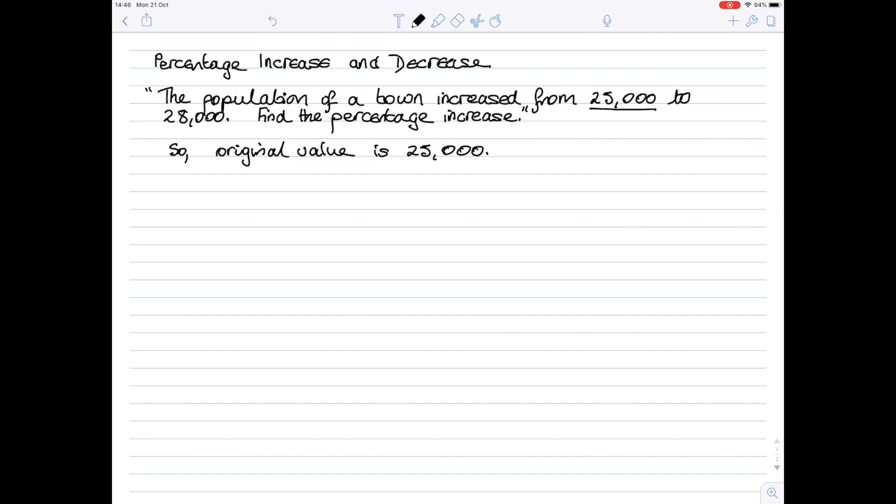Now you've identified that, you can find the actual numeric increase or decrease. In this question it starts at 25,000 and rose to 28,000, so here we have an increase and the increase is 28,000 minus 25,000, which is 3,000. So the increase is 3,000 people and the original value was 25,000.